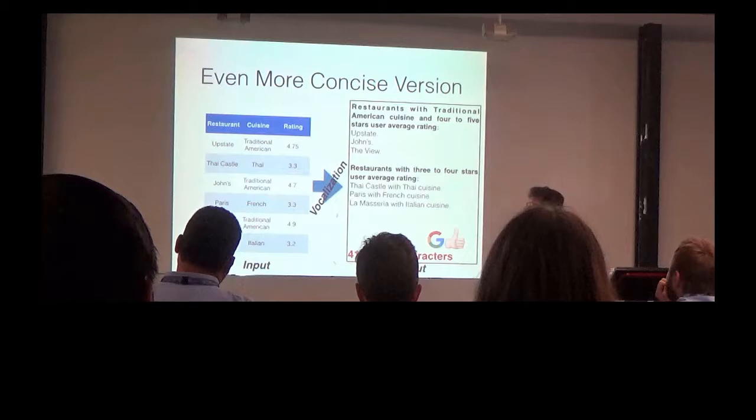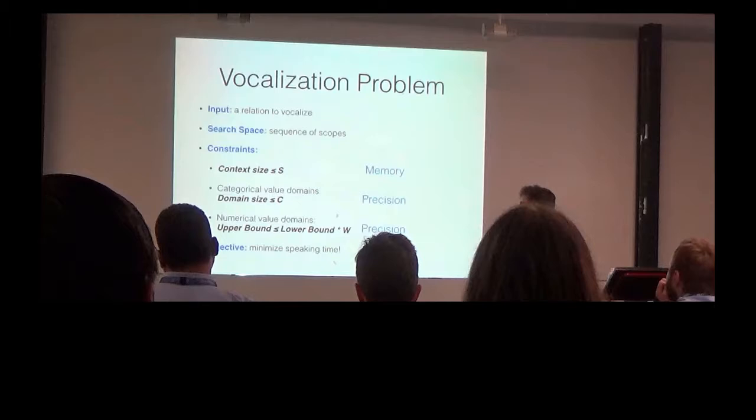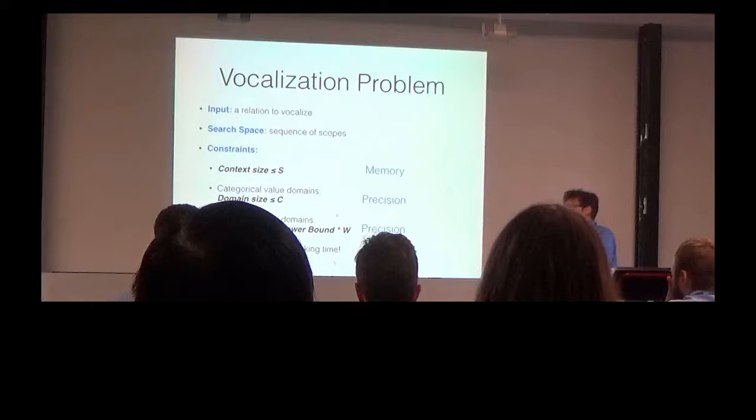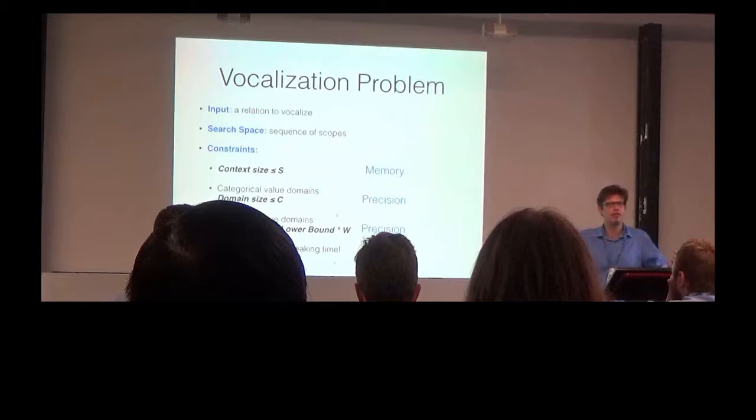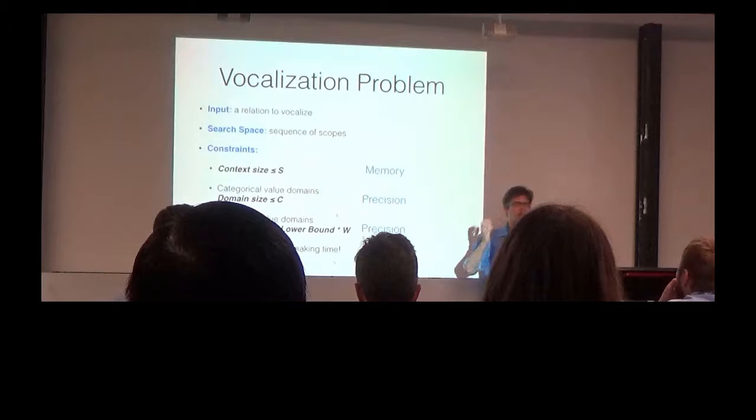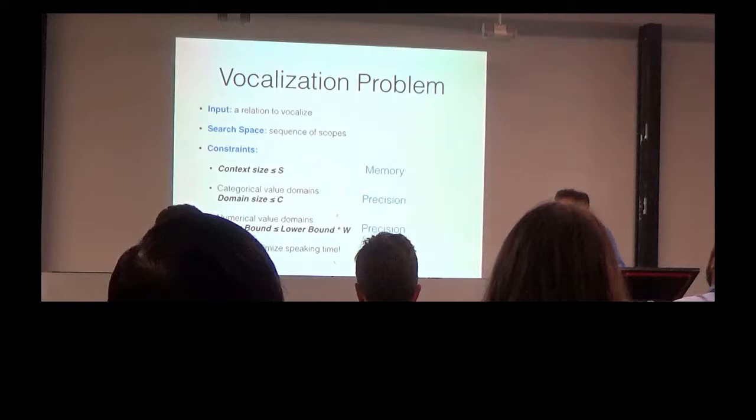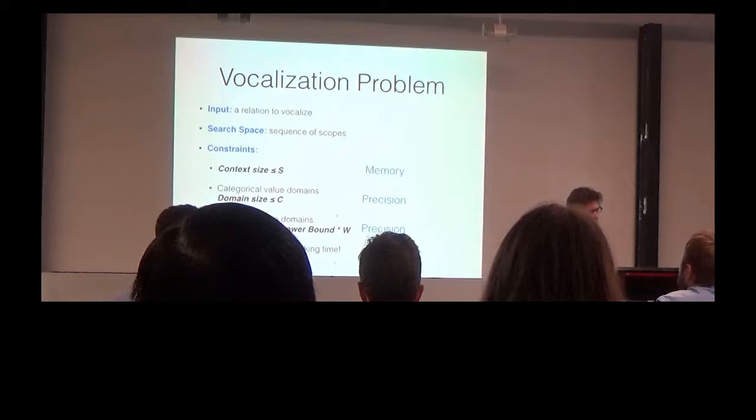So, in general, in order to formalize the problem a bit more, we want to minimize speaking time for a given relation, we deliberately consider an output space of a very simple structure in order to make it easier to understand for the listener, and we put constraints on the size of the context, especially by the number of assignments, because this is what people need to remember in order to interpret the following rules, and we also put constraints on the size of the relevant remains since that relates to precision.